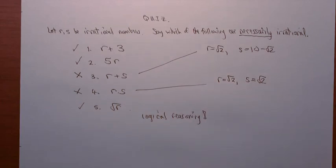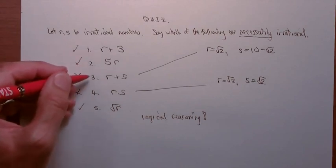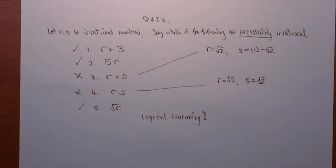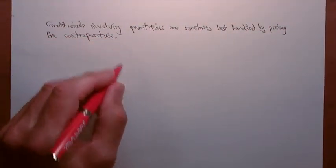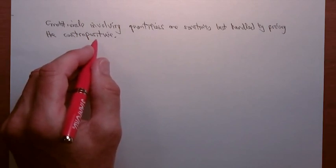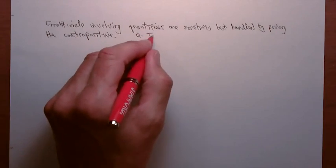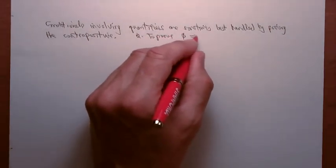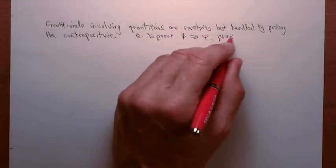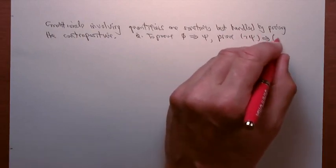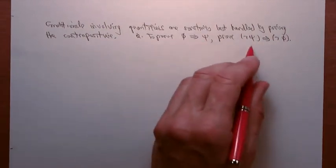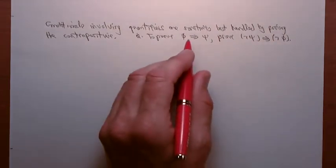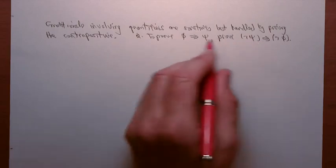Remember, in assignment seven I'm going to ask you to give proofs of each of the five answers. Conditionals involving quantifiers are sometimes best handled by proving the contrapositive. To prove a conditional φ ⟹ ψ, you can instead prove ¬ψ ⟹ ¬φ — that's the contrapositive of φ ⟹ ψ. You reverse φ and ψ and put negations in front of them. In assignment four, we proved that those two are equivalent using truth tables.